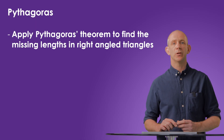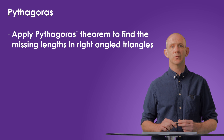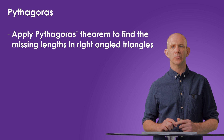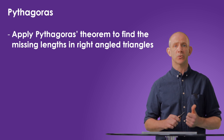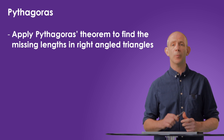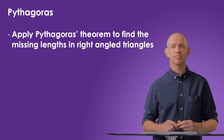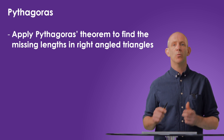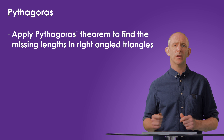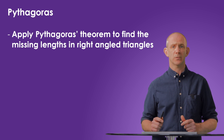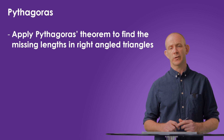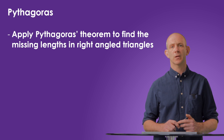In this video we looked at how to apply Pythagoras theorem to find the missing lengths of right angle triangles. Remember to label the sides of the triangles with C always being on the hypotenuse, or longest side, and the one opposite the right angle. Then it's A squared plus B squared equals C squared, which can always be rearranged to find one of the shorter sides. In the next video we'll be looking at trigonometry with right angle triangles.